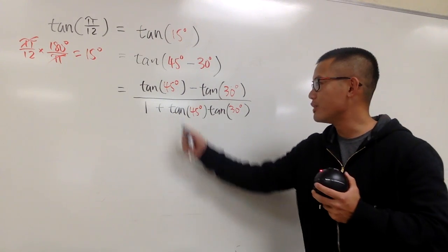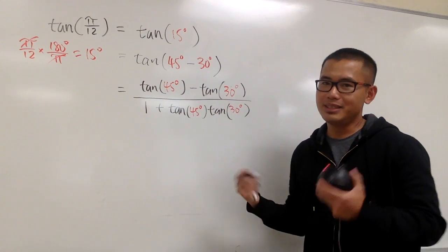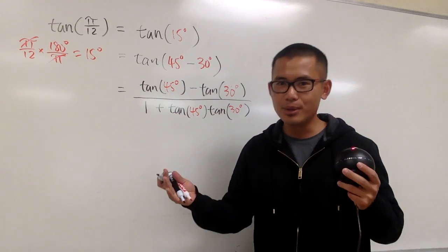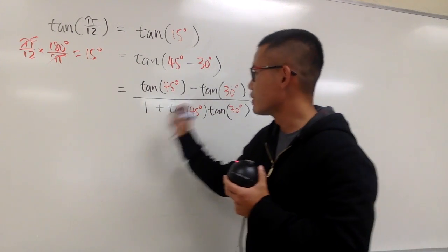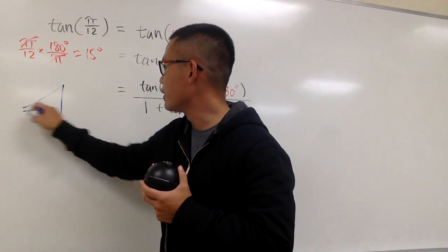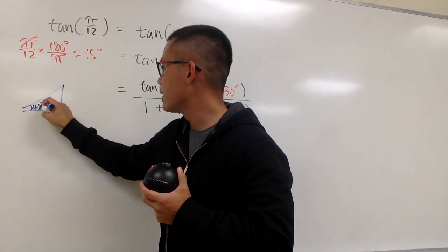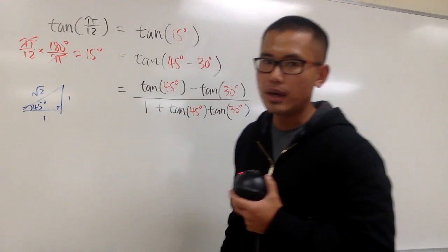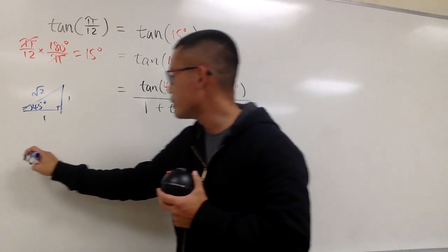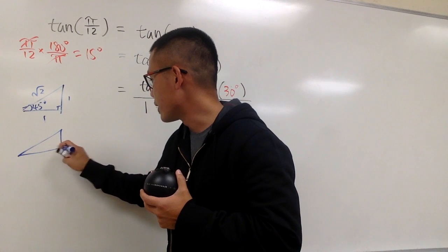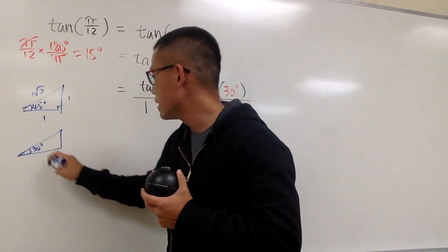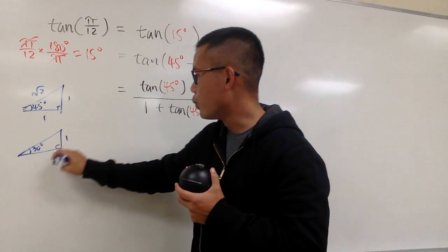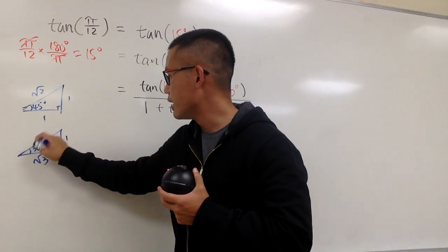Next we need the values individually, so let's look at the typical special right triangles. We have the 45-45-90 triangle with sides 1, 1, square root of 2. We also have the 30-60-90 triangle, with the ratio of sides 1, square root of 3, and 2.